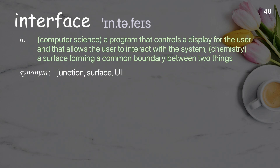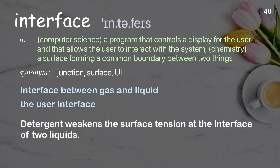Interface: in computer science, a program that controls a display for the user and allows the user to interact with the system; in chemistry, a surface forming a common boundary between two things. Examples: interface between gas and liquid, the user interface. Detergent weakens the surface tension at the interface of two liquids.